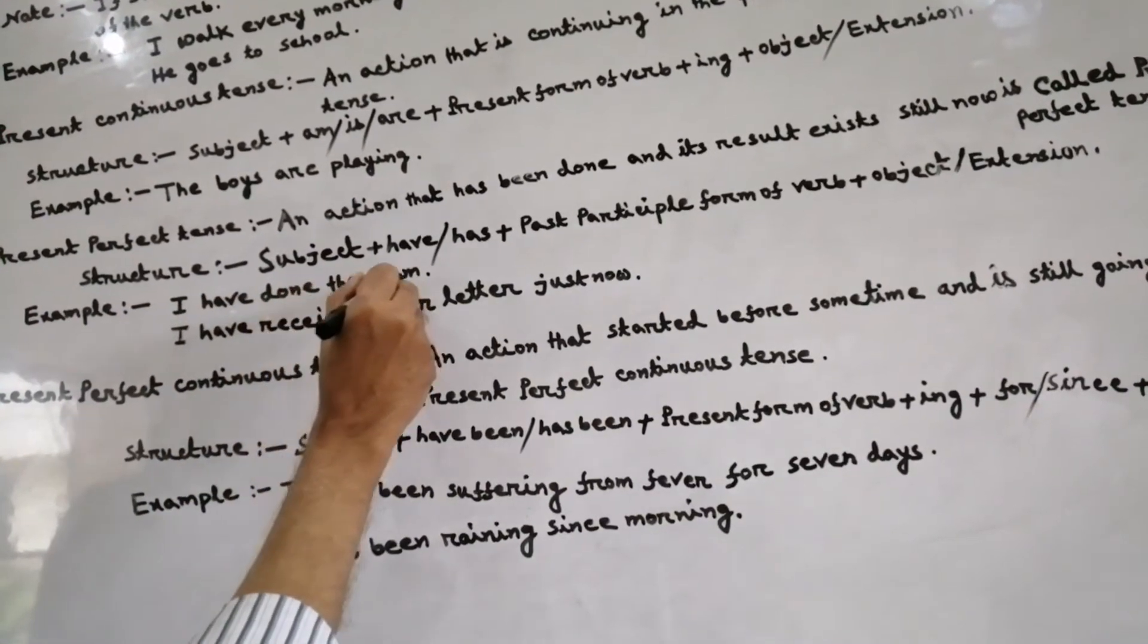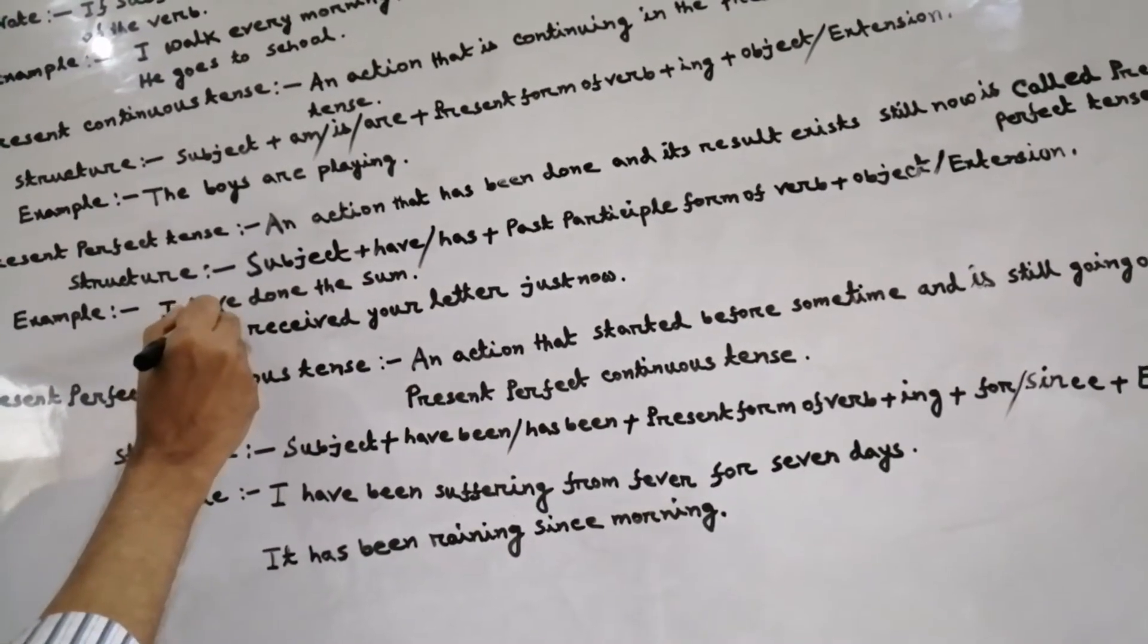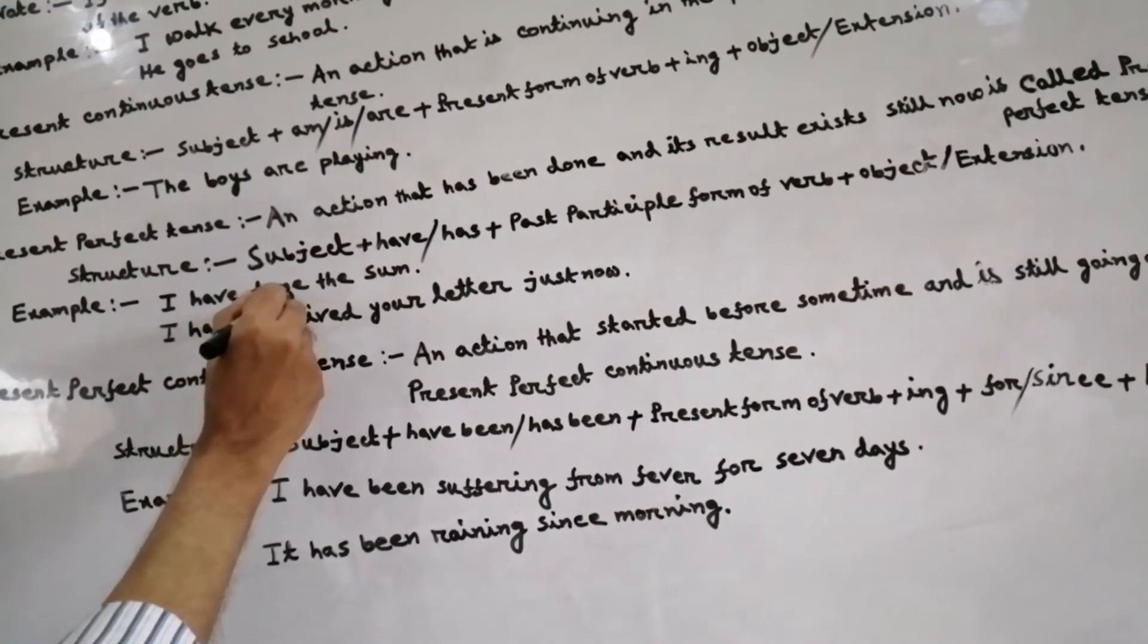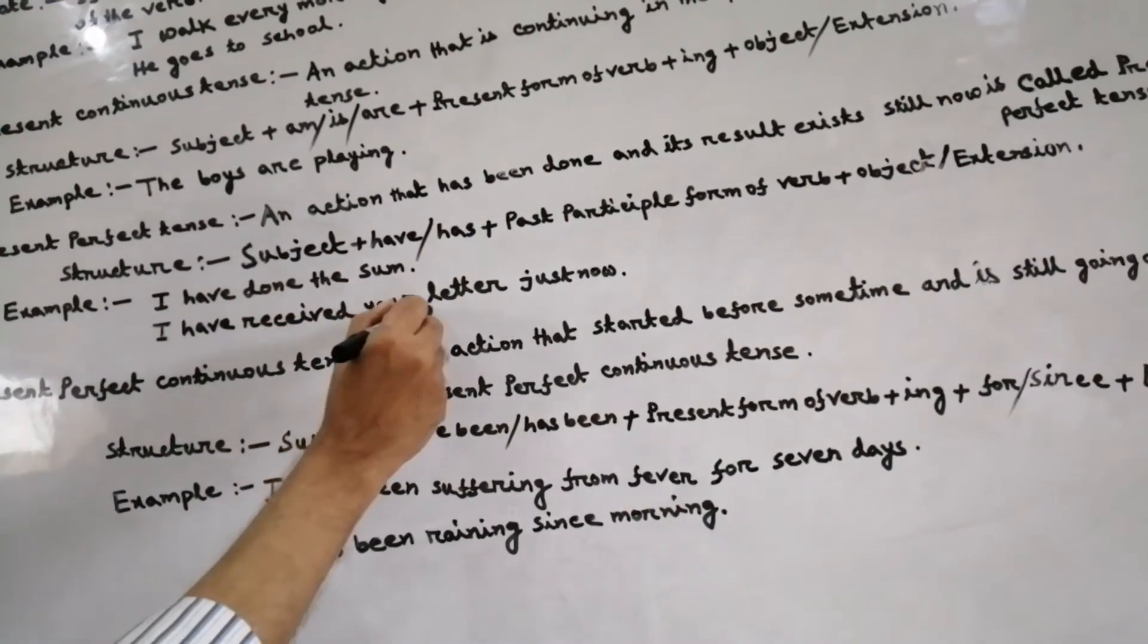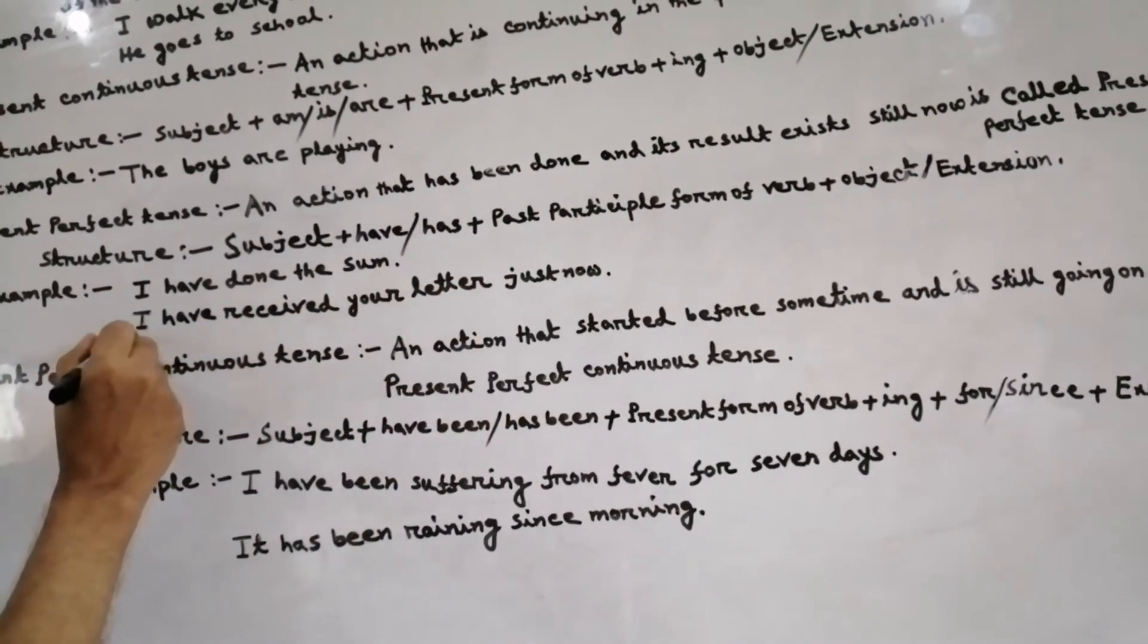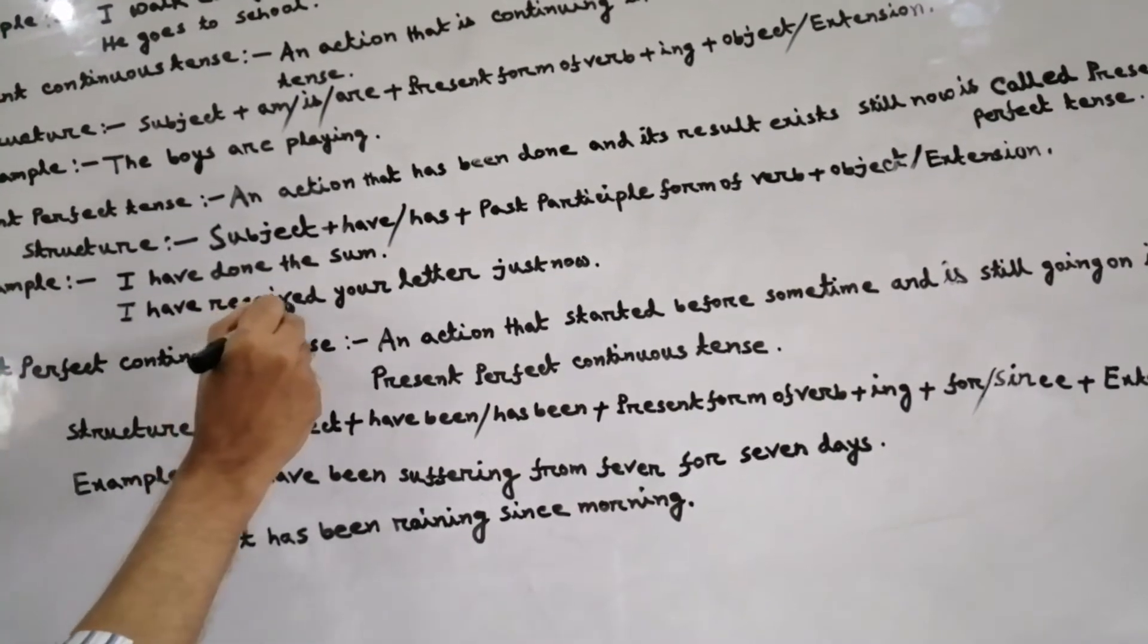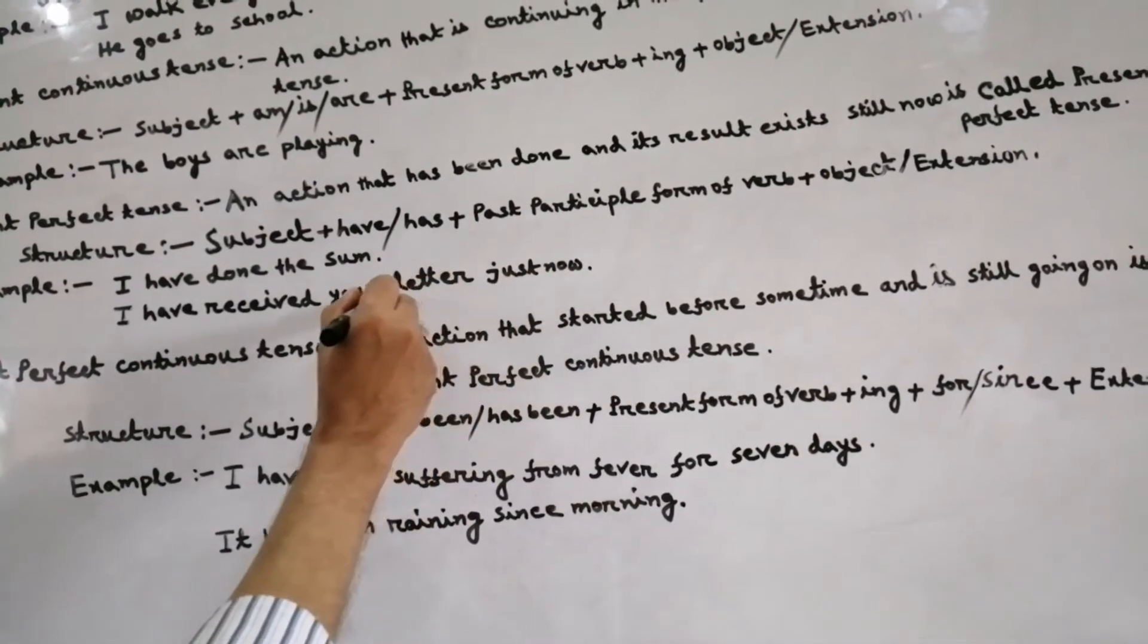Example: I have done the sum. Here I subject, have auxiliary verb, done past participle form of verb, the sum object. I have received your letter just now. Here I have auxiliary verb, received past participle form of verb, your letter just now extension.